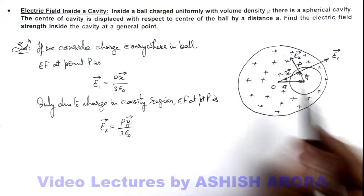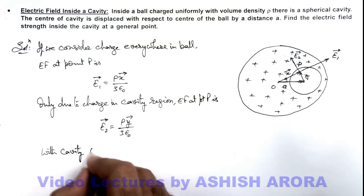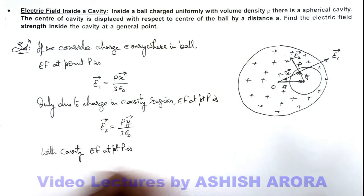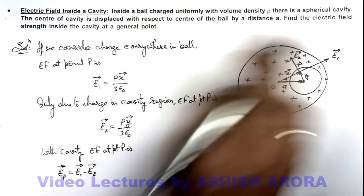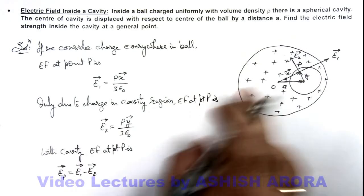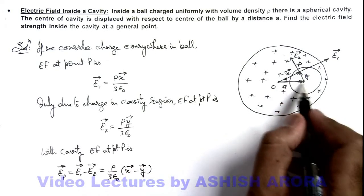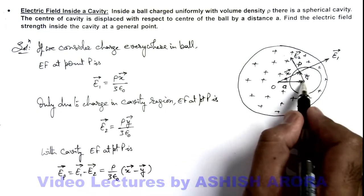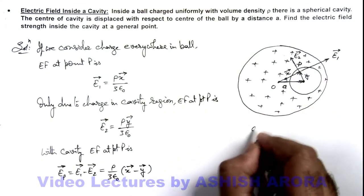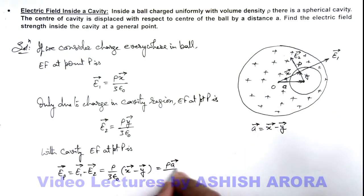Now if we remove this charge, with the cavity present, the electric field at point P is E_P = E1 − E2. E1 is the field due to the whole charge, and E2 is the field only due to the cavity charge, so subtracting gives the field with the cavity. Substituting the values: E_P = (ρ / 3ε₀)(x vector − y vector). From the triangle, x vector minus y vector is the position vector of the cavity center with respect to the ball center, which is the vector a. So E_P = ρa / 3ε₀.